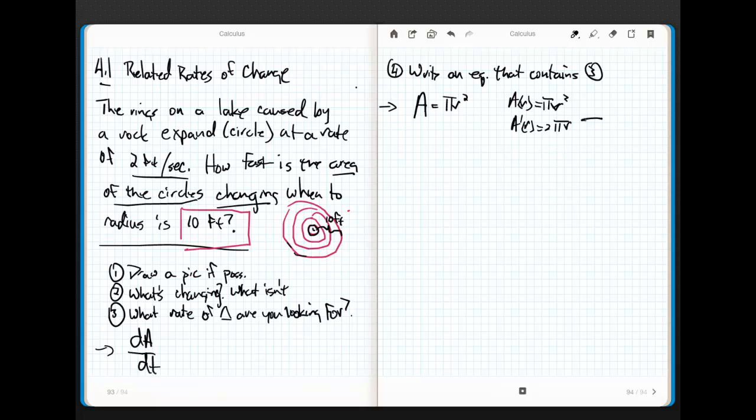There's a problem. This guy right here is dA over dr, and I need a dA over dt. This is the rate of change of the area as a function of r, not as a function of time. Well, how the heck are we going to come up with a dA over dt then? That's easy. The easiest part is I'm going to use implicit differentiation to differentiate this guy right here. That's kind of cool, huh? Okay.